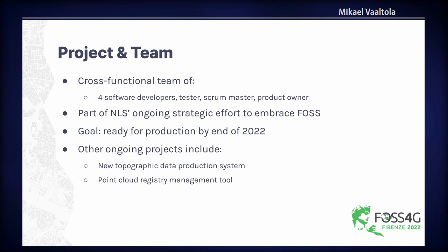One of the goals is that the project should be production ready by the end of 2022, and I believe we are on the way to hit that. There are also a couple of other interesting projects at the NLS ongoing at the same time. There is a new topographic data production system, which was also presented today — a huge effort by the NLS to redo the whole National Topographic Database on a FOSS4G stack as well. There is also a point cloud registry management tool, which has a lot of similarities with this project. It's also a QGIS plugin built for managing a registry that is in PostGIS.